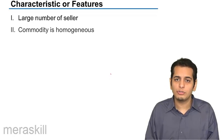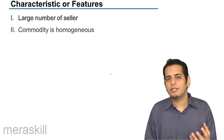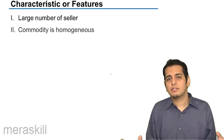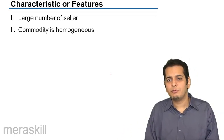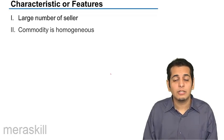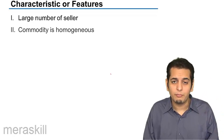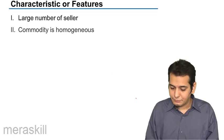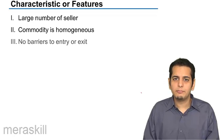The next feature is that the commodity is homogeneous. Homogeneous means the commodity is identical — all sellers are selling the same product and there is no difference between the product sold by any of the sellers. Even though there are innumerable sellers, every seller is selling the same product.